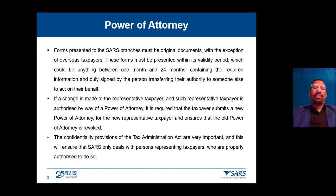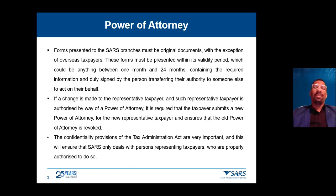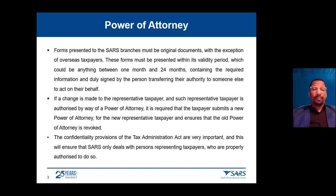It's important to note that the validity period of a power of attorney is anywhere between one month to 24 months. Remember, if the registered taxpayer or the registered representative of a company — which is the public officer or the accounting officer — if that changes, then your current power of attorney becomes null and void and it needs to be updated on the system.